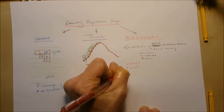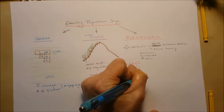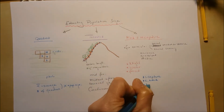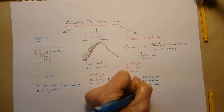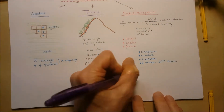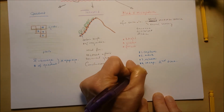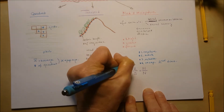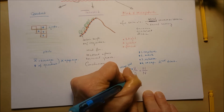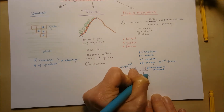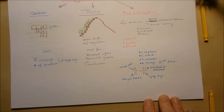So we capture the organisms, mark them, release them back into nature, and then recapture them a second time. The formula we use is: R divided by S equals M divided by N. R is the number of recaptured organisms the second time that were already marked the first time. S is the size of the sample gathered the second time. M is the number of marked and released organisms from the first capture, and N is the population size we solve for.